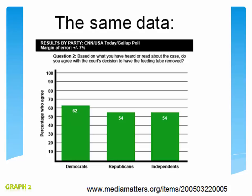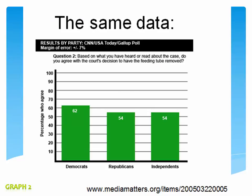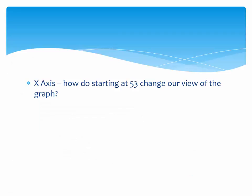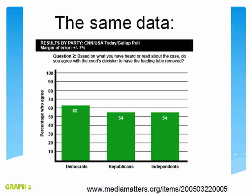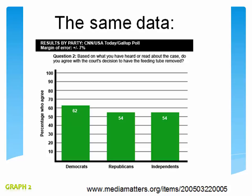Do you see how it's the exact same information — 62, 54, 54 — the same exact data, but doesn't it look different? Now it looks like everybody is about the same in agreeing with the court's decision. This makes it look completely different. See how they can skew graphs to make you believe certain things. The same graph, but starting at zero, looks so different.